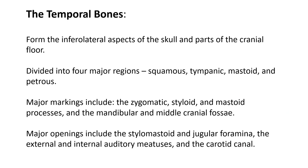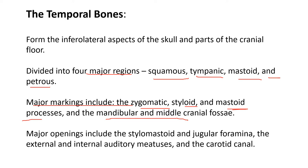The temporal bones form the inferior lateral aspects of the skull and parts of the cranial floor. They're divided into four major regions: the squamous portion, the tympanic portion, the mastoid, and the petrous portion. The major markings include the zygomatic, styloid, and mastoid processes, and the mandibular and middle cranial fossae. The mandibular process fits into the mandibular fossa, forming the TMJ joint. Major openings include the jugular foramen, the stylomastoid foramen, external and internal acoustic meatus, and even the carotid canal running through there.